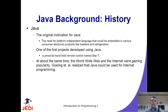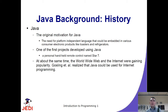One of the first projects developed in Java was its use for a remote control named Star 7. Also, from 1991 onwards, it was the boom of the World Wide Web and the internet, so Java gained popularity at that time. Gosling and his team also realized that Java could be used for internet programming and applications used on the internet.